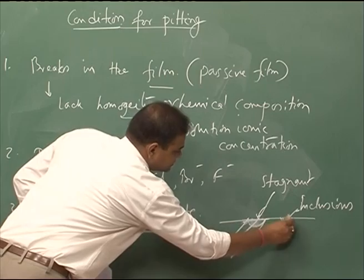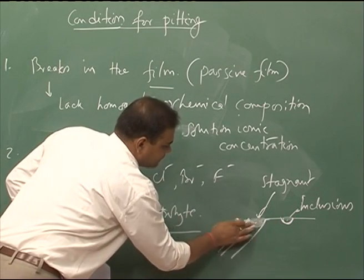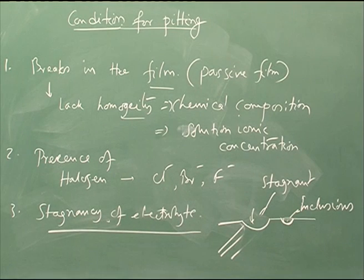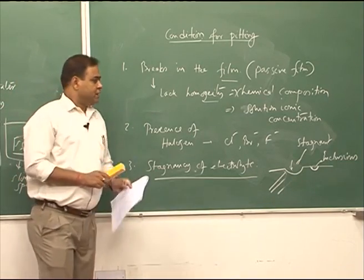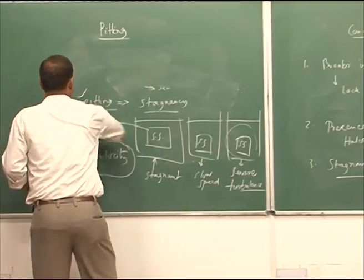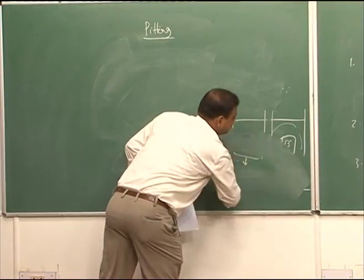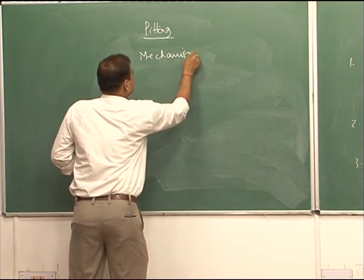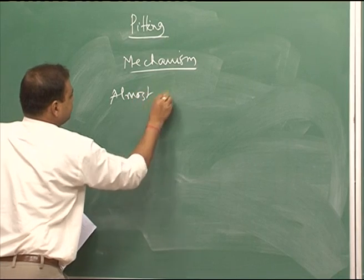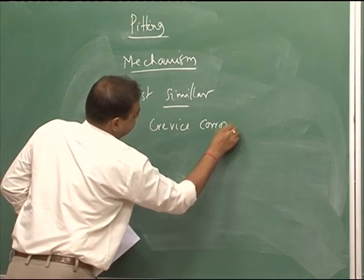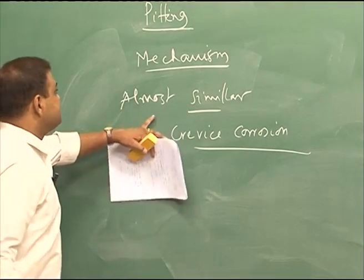Once we have a groove formation — even on a flat surface — stagnancy of the solution inside the groove occurs. Once we have stagnant solution, the situation becomes the same as crevice corrosion. The mechanism of pitting corrosion is therefore almost similar to crevice corrosion.